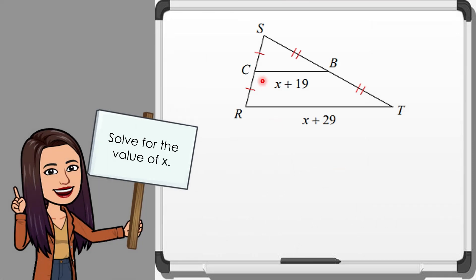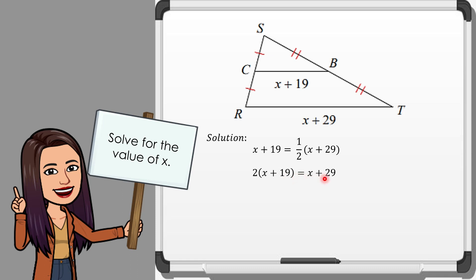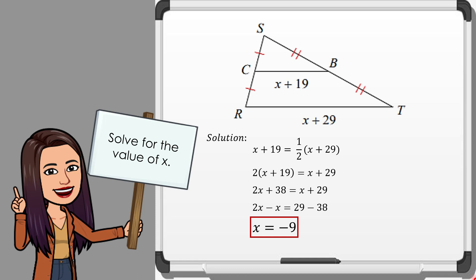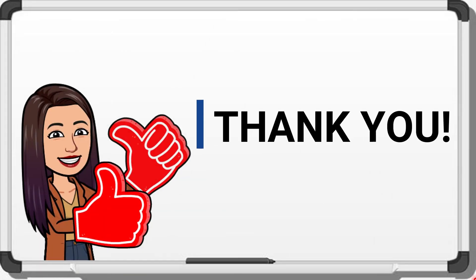For our last example, we have the measure of our midline and the third side. Our equation is X plus 19 equals one half of (X plus 29). Multiplying both sides by 2 gives 2(X plus 19) equals X plus 29. By the distributive property, 2X plus 38 equals X plus 29. Applying the addition property gives 2X minus X equals 29 minus 38, so X equals negative 9. That is how we prove the midline theorem inductively and deductively, and how we use the midline theorem to solve problems. That's the end of our tutorial — thank you for watching, see you again in my next video!